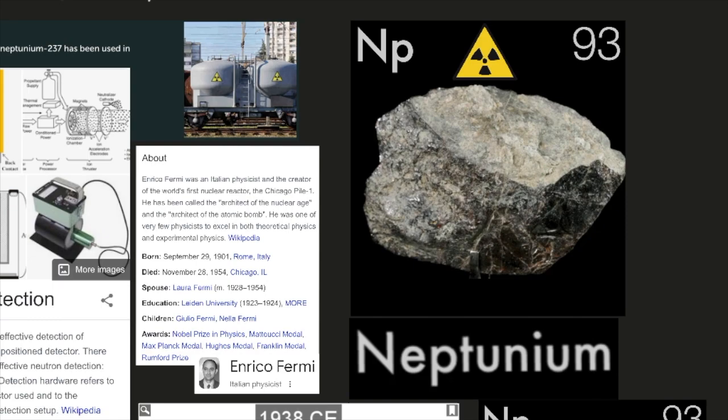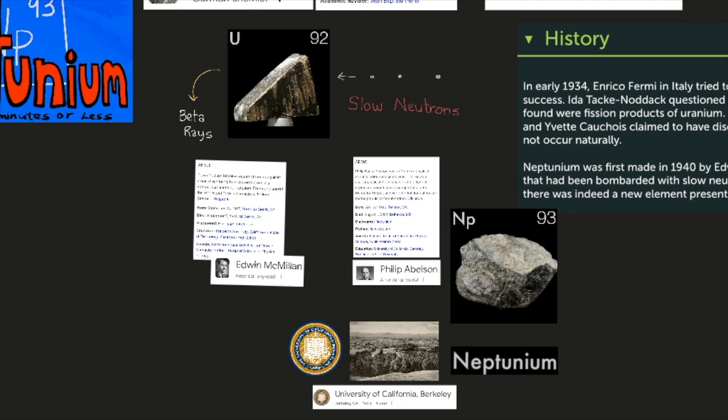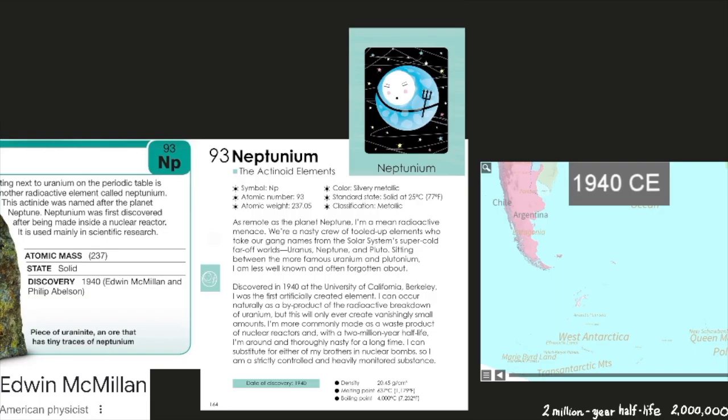Enrico Fermi was an Italian physicist and creator of the world's first nuclear reactor, the Chicago Pile 1. He has been called the architect of the nuclear age and the architect of the atomic bomb. He was one of the very few physicists to excel in both theoretical physics and experimental physics. Neptunium was first made in 1940 by Edwin McMillan and Philip Abelson at Berkeley, California. It came from a uranium target that had been bombarded with slow neutrons and which then emitted unusual beta rays indicating a new isotope. Abelson proved that there was indeed a new element present.